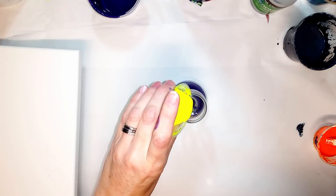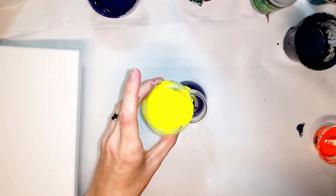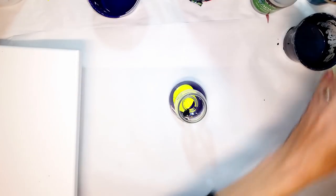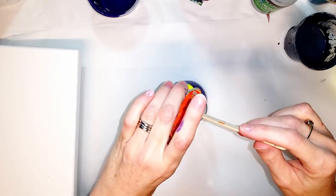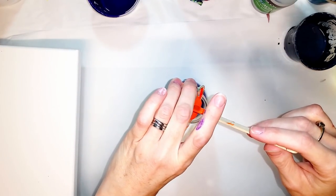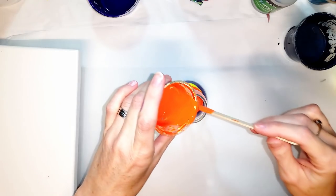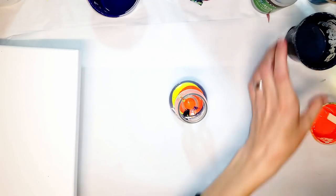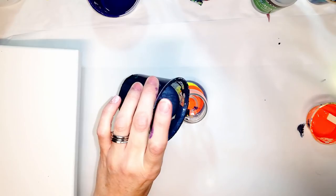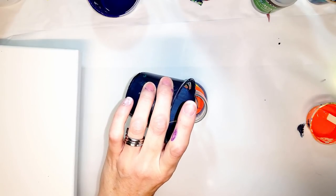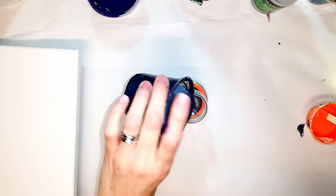Hopefully, my colors are mixed thick enough that we won't get too much bleeding from that purple into that yellow. I think they are. This yellow and orange have been in there a while. I probably would have been smart maybe to add a little water. That's okay. We'll see what happens.